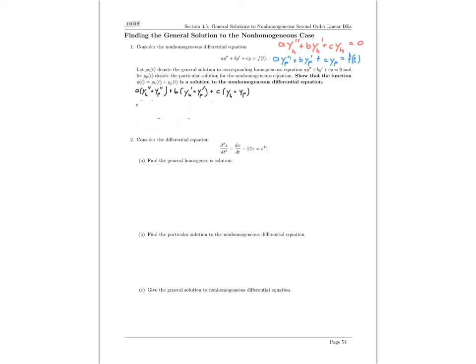If we go ahead and group just the homogeneous pieces together, then I would have a y_h double prime plus b y_h prime plus c y_h. Then let me group the particular pieces together - I also have three of those - and when I do that I would get an a y_p double prime plus b y sub p prime plus c y sub p.